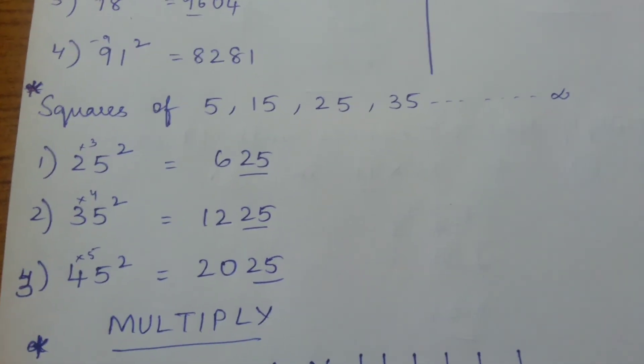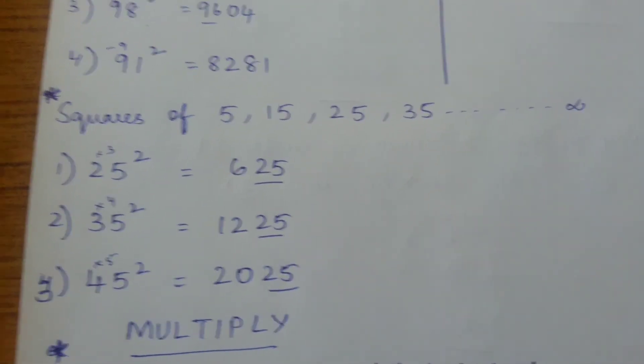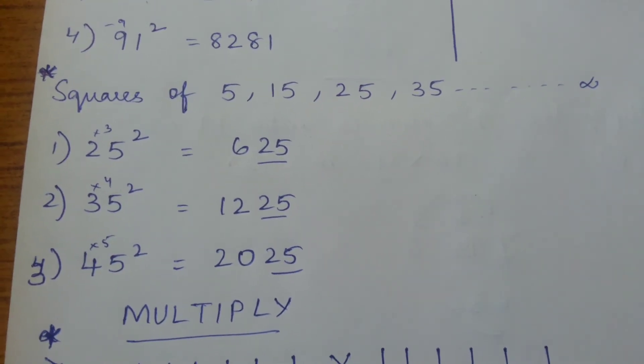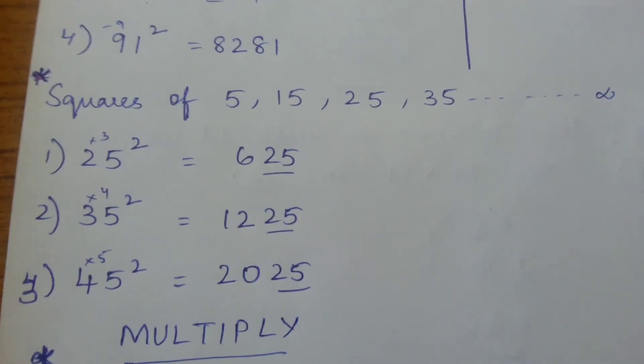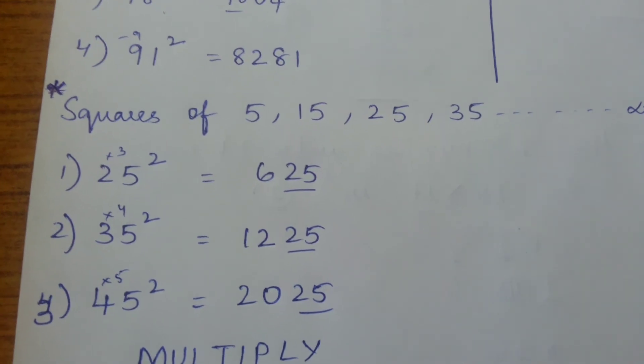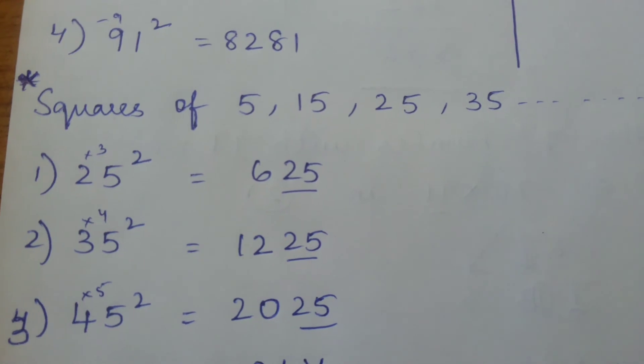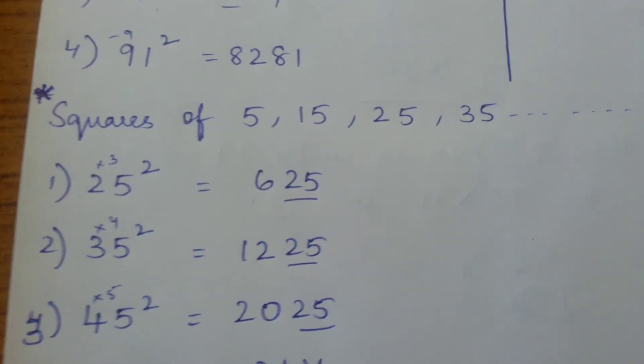Now we'll see squares of 5, 15, 25, 35. For 25 squared, the last two digits will always be 25. The leftmost digit is multiplied with the next digit in series. For 25², 2's next number is 3, so 2 into 3 is 6, answer is 625. For 35 squared, 3's next number is 4, so 3 times 4 is 12, answer is 1225.